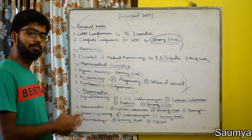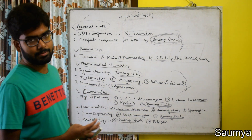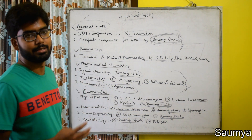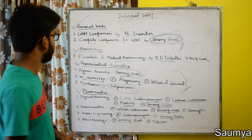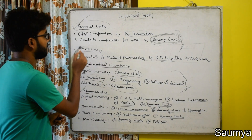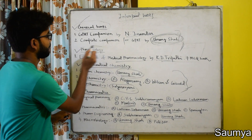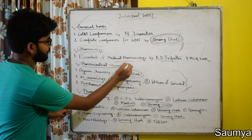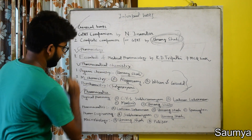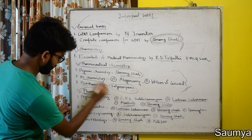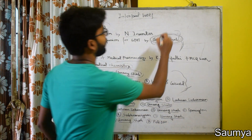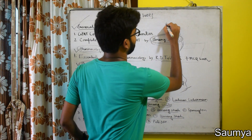So in total, there are four subjects — four papers — that are most important in GPAT: Pharmacology, Pharmaceutical Chemistry, Pharmaceutics, and Pharmacognosy.